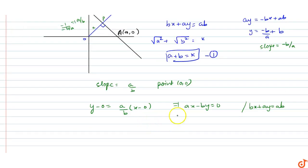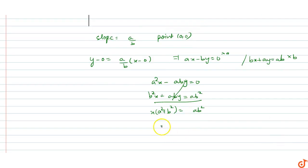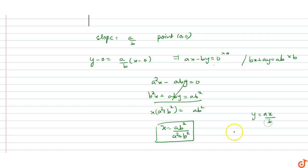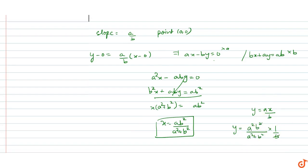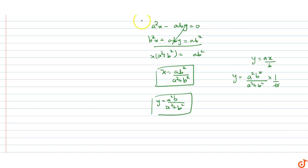To find the coordinates of foot of perpendicular, we find the point of intersection P. Multiplying the first equation by a and the second by b: a²x minus aby equals 0, and b²x plus aby equals ab². Adding both equations: x(a² plus b²) equals ab², so x equals ab²/(a² plus b²). Substituting back, y equals a²b/(a² plus b²).